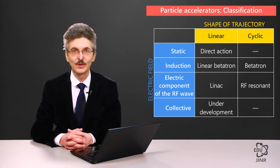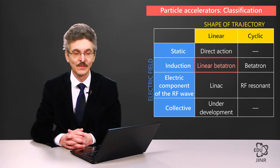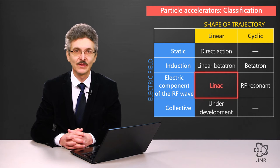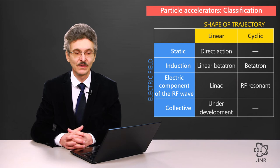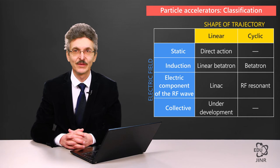There are more linear accelerators of various types. Linear accelerators which use a static field are direct action accelerators. Linear accelerators which use an induction field belong to the linear betatrons. A linear accelerator working on an electric field of an electromagnetic wave is called a linac, which is a blend word that comes from linear accelerator. Various collective accelerators have not yet been given a common name.